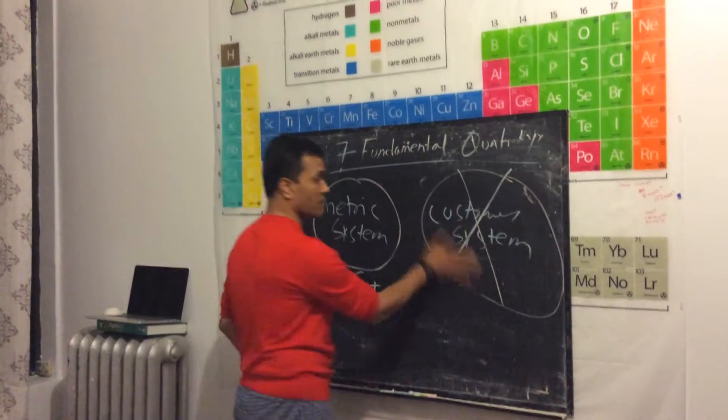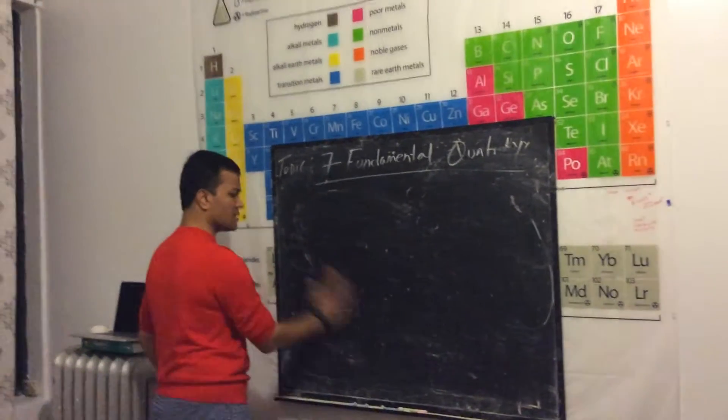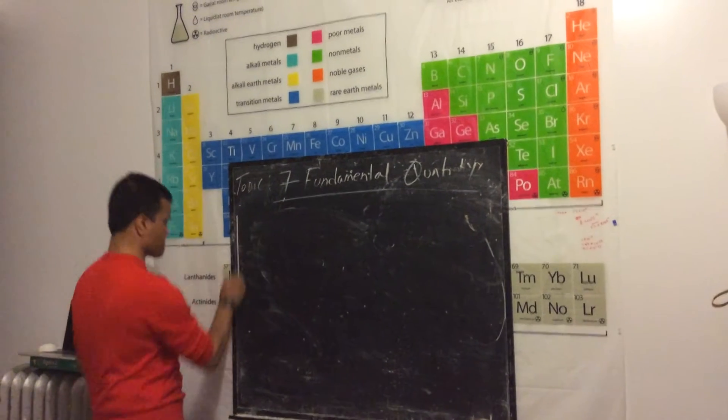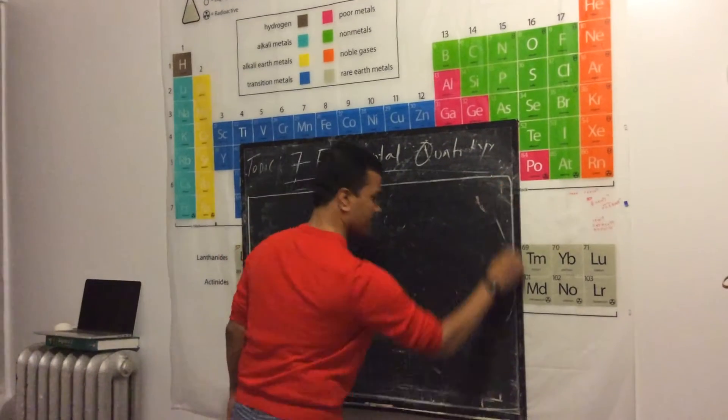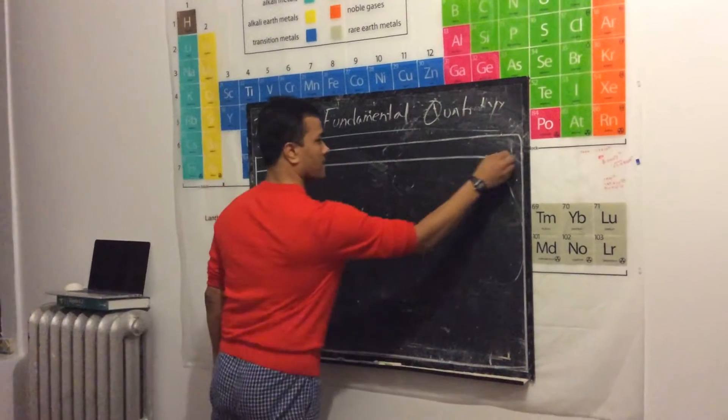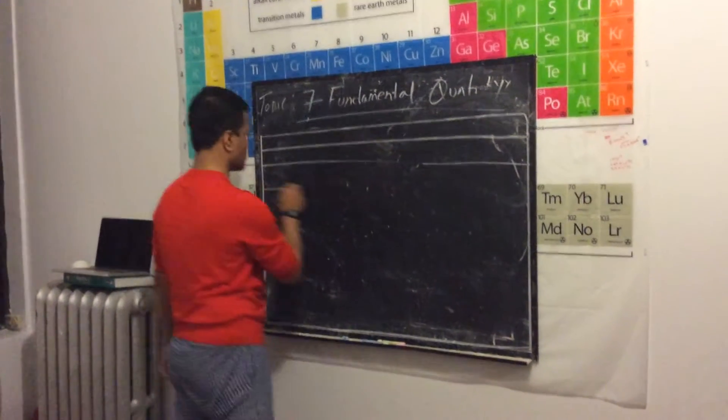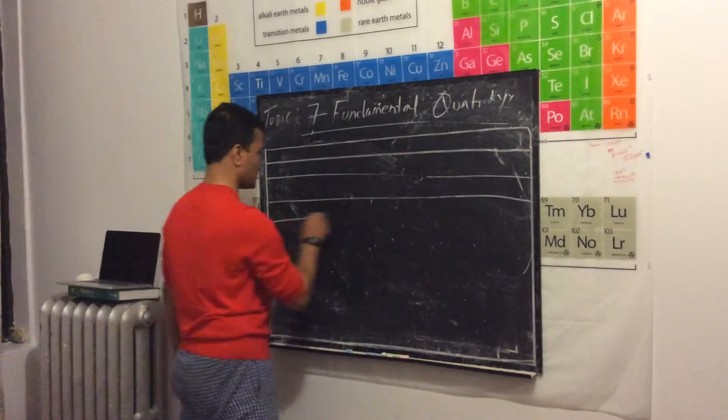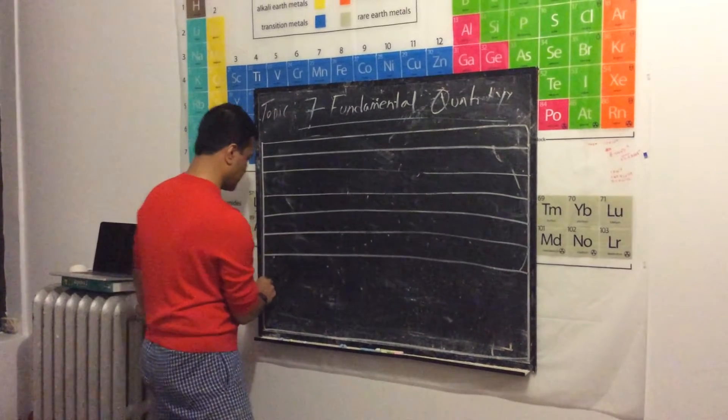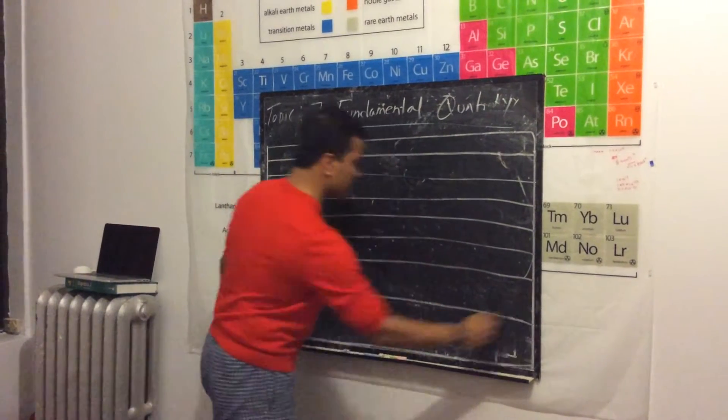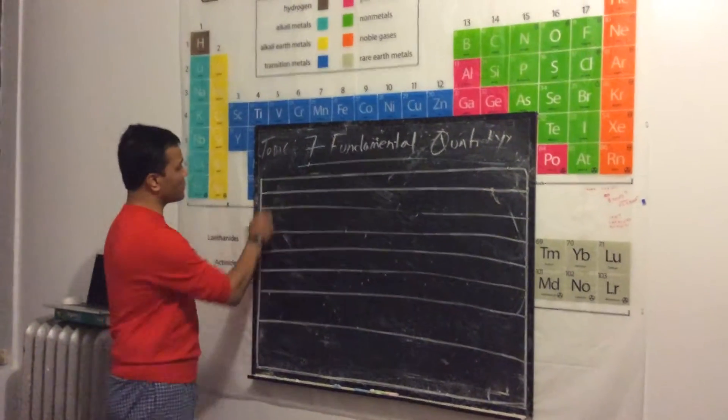Let's draw a table as big as I can go. Let's make seven rows: one, two, three, four, five, six, and seven. The first column is for the quantity.